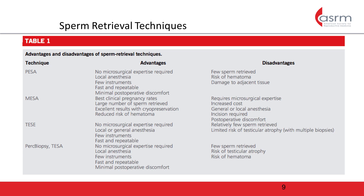Testicular sperm extraction, or TESE, involves making an incision directly into the tunica albuginea of the testis and harvesting the seminiferous tubules that are readily extruded. This technique has the benefit of being performed without microsurgical expertise and is both fast and repeatable.